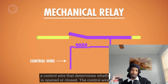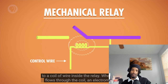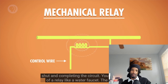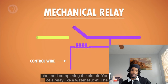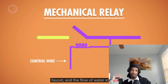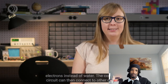The brains of these huge electromechanical beasts were relays — electronically controlled mechanical switches. In a relay, there is a control wire that determines whether a circuit is opened or closed. The control wire connects to a coil of wire inside the relay. When current flows through the coil, an electromagnetic field is created, which in turn attracts a metal arm inside the relay, snapping it shut and completing the circuit. You can think of a relay like a water faucet — the control wire is like the faucet handle. Open the faucet, and the water flows through the pipe. Close the faucet, and the flow of water stops.